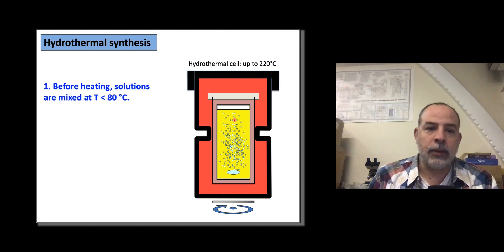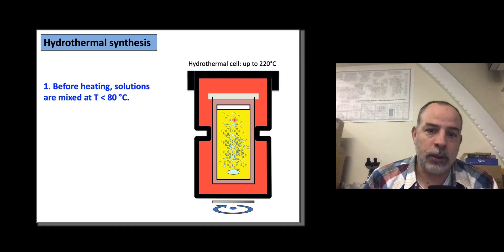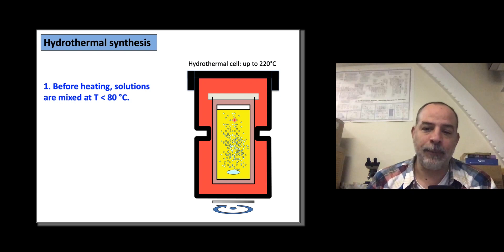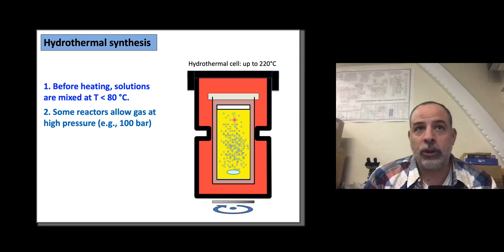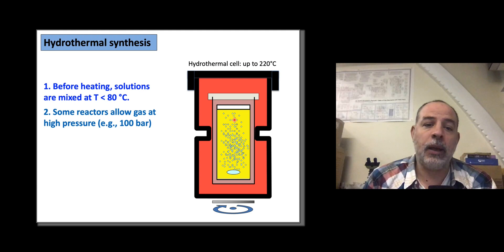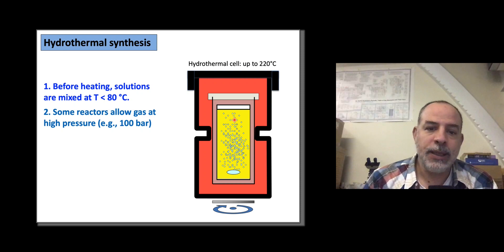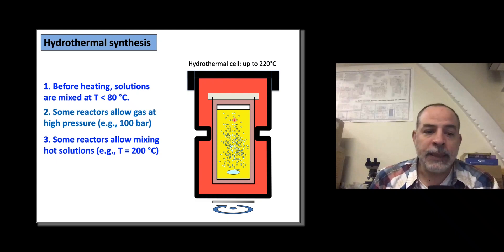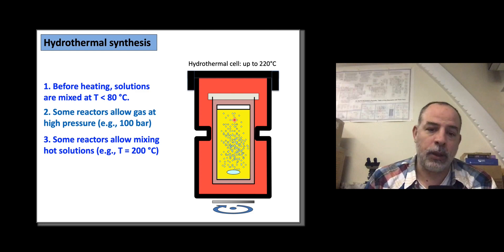Things to consider: usually when we mix solutions, they should not be very hot — it's not easy to mix hot solutions. We usually mix at ambient temperature or below 80 degrees C. Some reactors can also accommodate gas; for example, if you want to use supercritical CO2, you can have a reactor with an inlet that inputs CO2 at high pressure and high temperature. There are also reactors developed to mix hot solutions, but usually by mixing very small volumes at temperatures not higher than 200–300 degrees C.